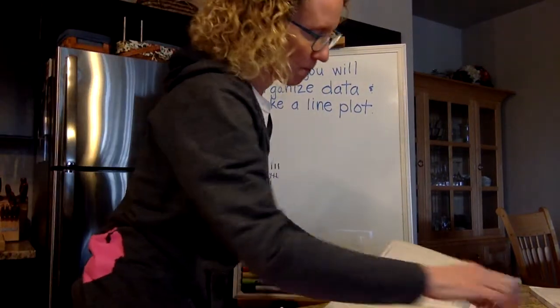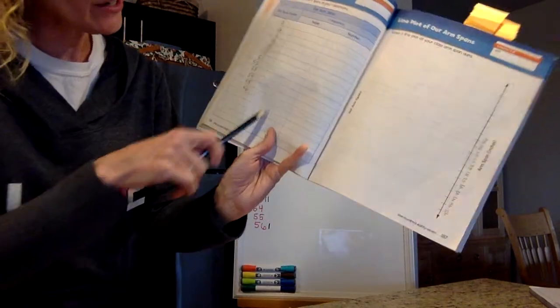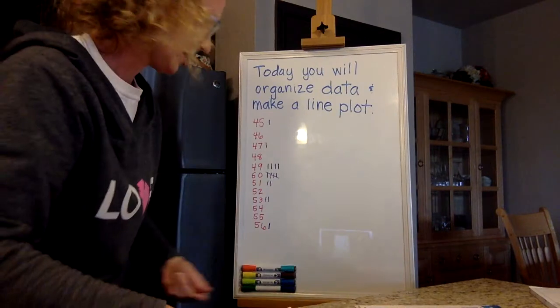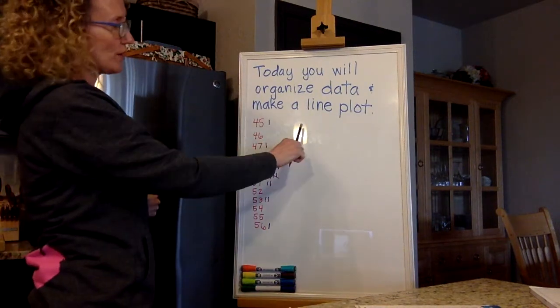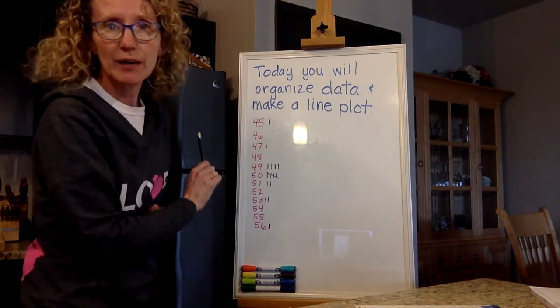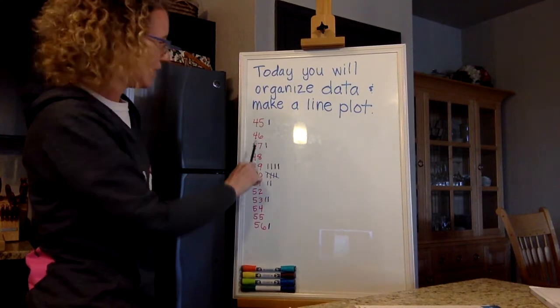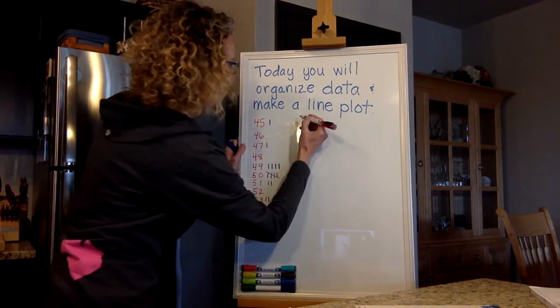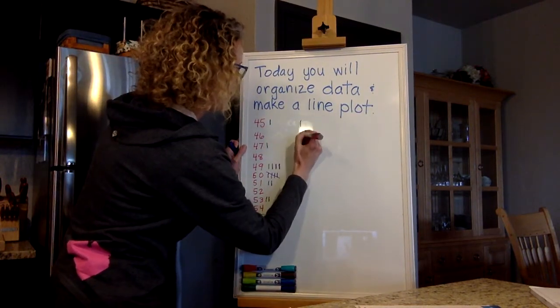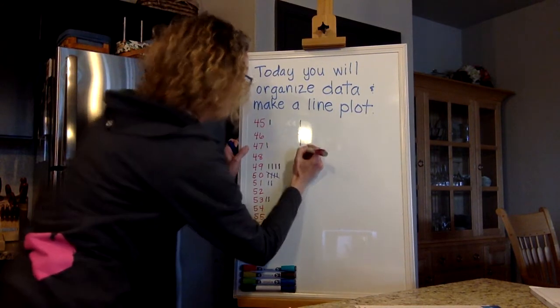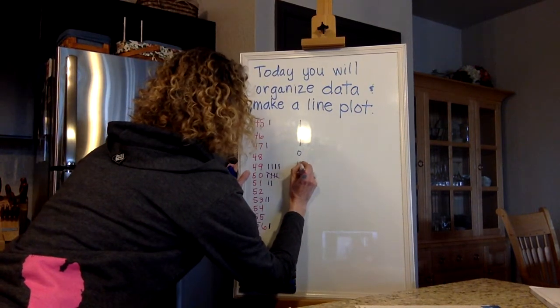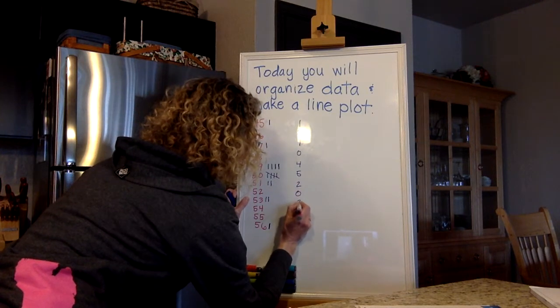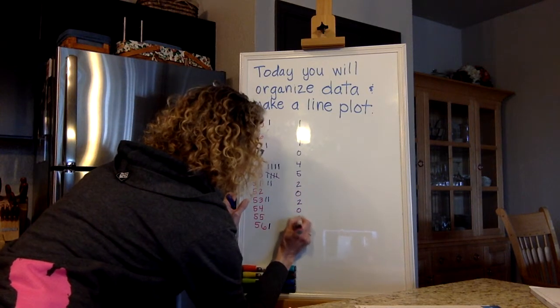Next step is we have to start putting Xs. Well, actually, you've got all your tallies here now. Now you have to write the number in the next column over. So you can do that. Because for 45, you'd write 1. For 46, what are you going to write? Yeah, 0. For 47, you're going to write 1. I guess I can do that for you. So 1, 0, 1, 0, 4, 5, 2, 0, 2, 0, 0, 1.